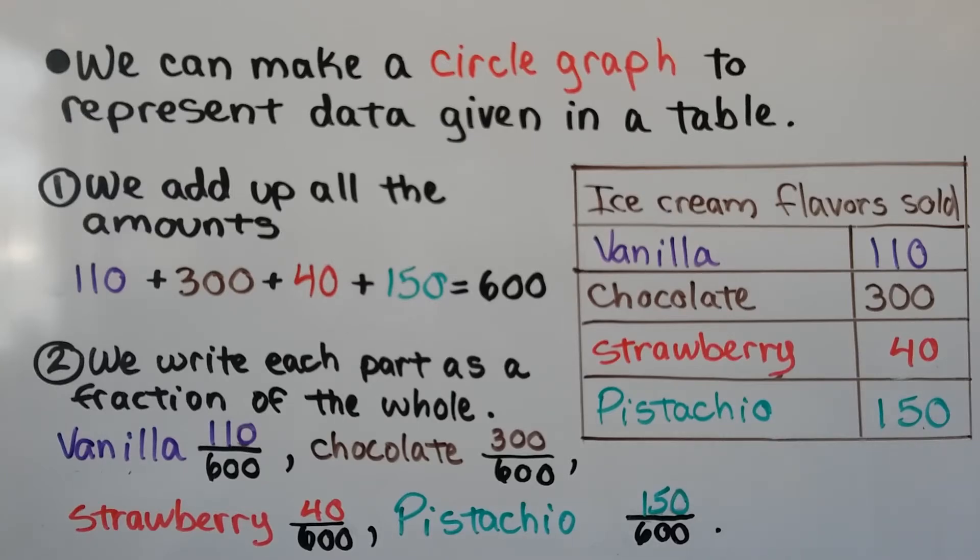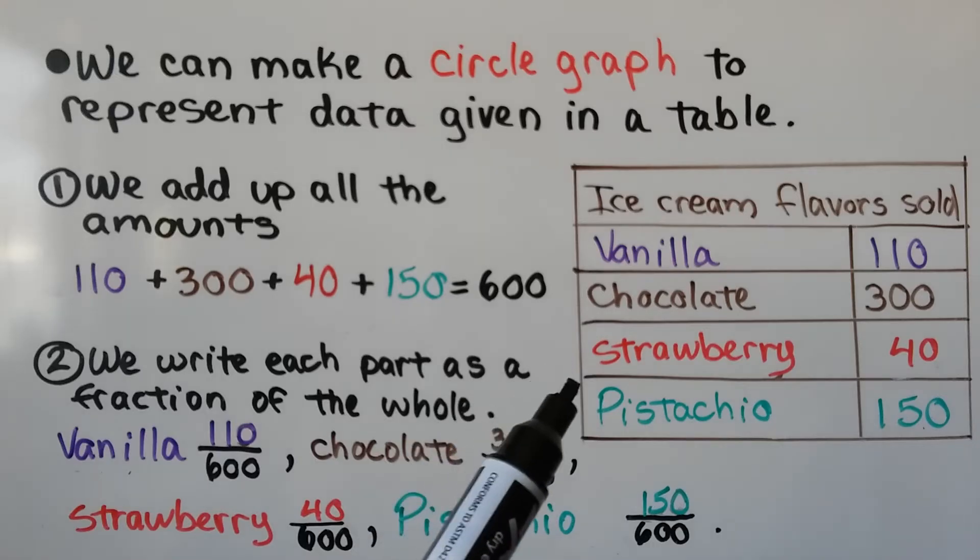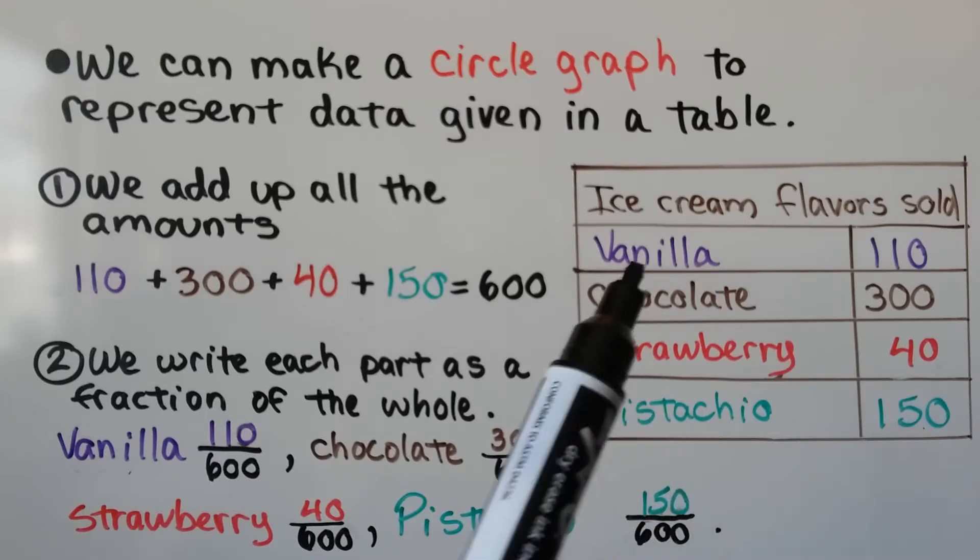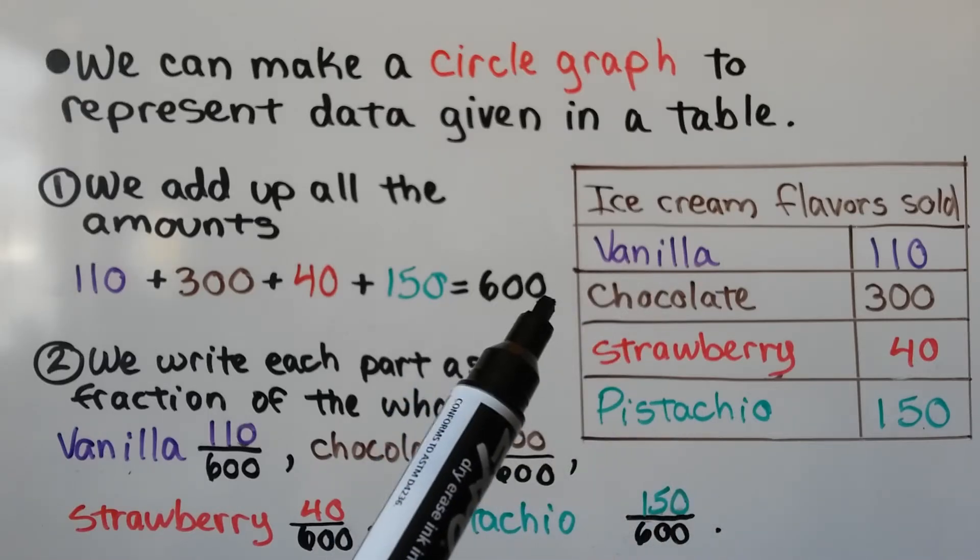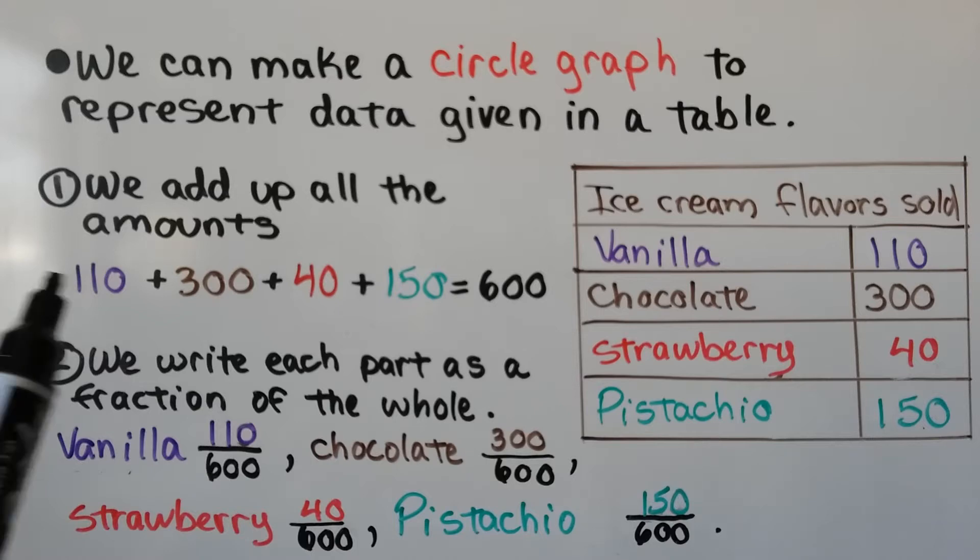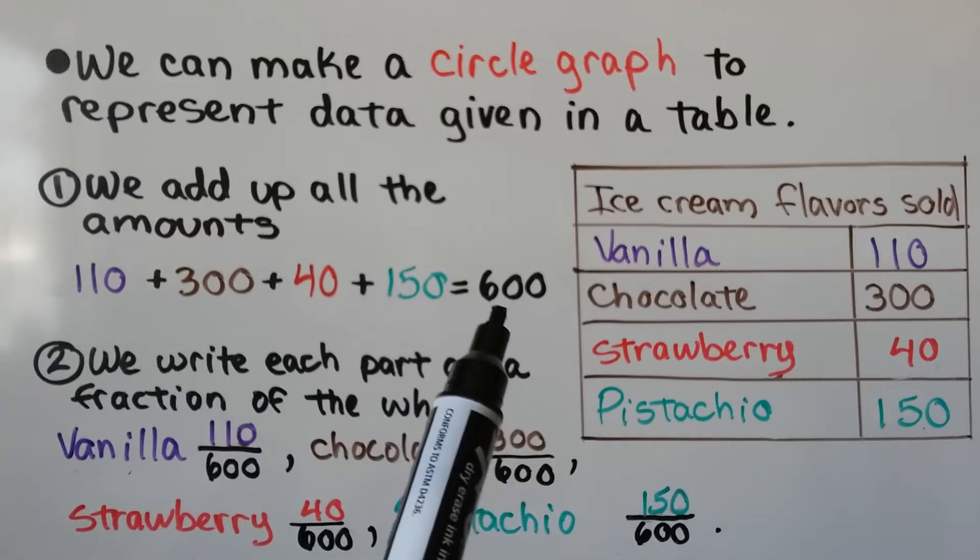We can make a circle graph to represent data given in a table. Here we've got a table of ice cream flavors sold. So maybe these are scoops of ice cream a shop sold. We have 110 vanilla, 300 chocolate, 40 strawberry, and 150 pistachio. We add up all the amounts. We get a total of 600. That's going to be our whole.